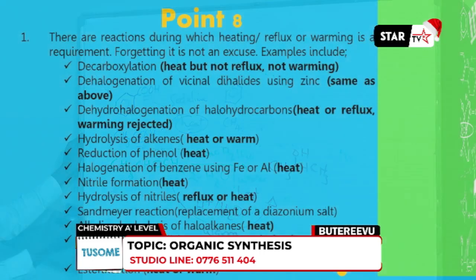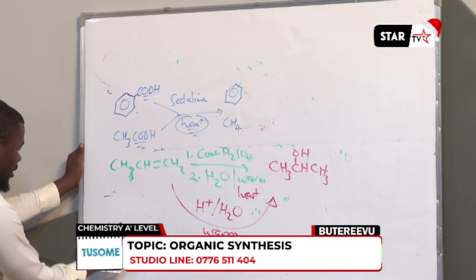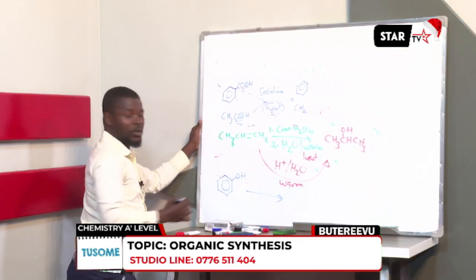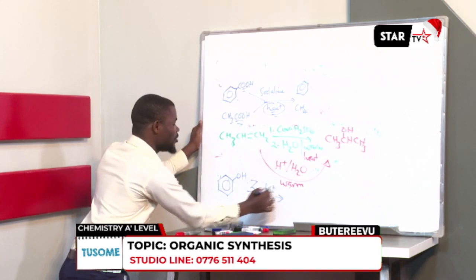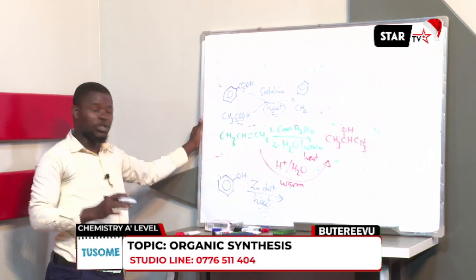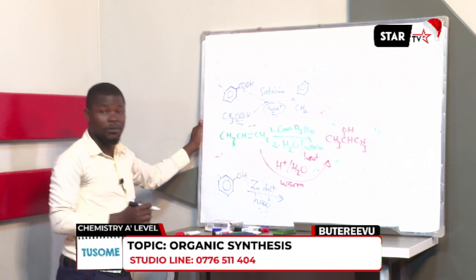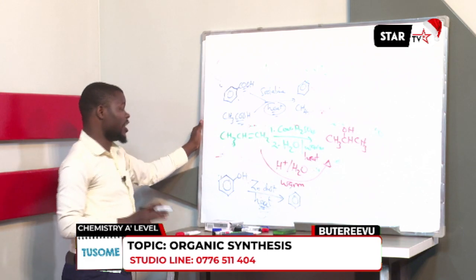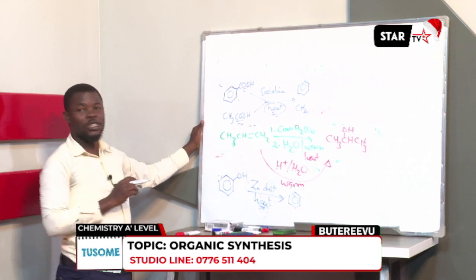The next reaction where you need to specify heat is reduction of phenol. If you want to reduce phenol using zinc dust, this reaction strictly requires heating. You should not use warming or reflux. It gives you benzene. So here, you strictly use heat — you don't warm, you don't reflux.